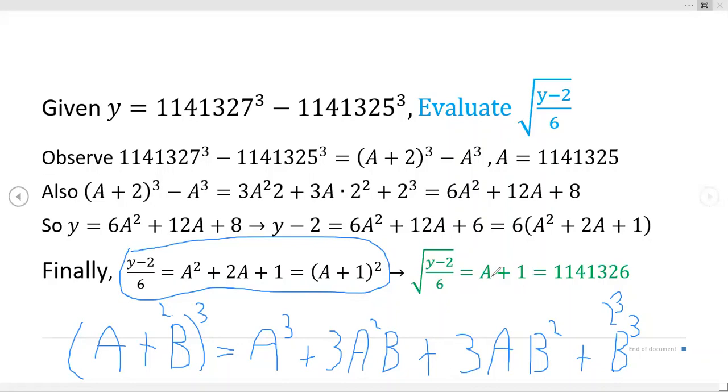This is the only time we have to do any calculations. The square root of (y - 2)/6 equals a + 1, but all the way back in the beginning we said a is equal to this value and so this is the final answer right here, 1141326. The power of substitution.